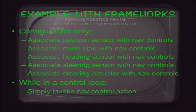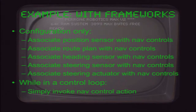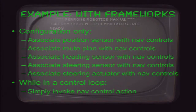With a framework, by using configuration files you associate a position sensor with your nav controls object, a route plan, a heading sensor, a steering sensor, and a steering actuator. In a control loop, it simply invokes the nav control action. You can have self-navigation for an application quickly, and focus on the big things. For the urban grand challenge, we didn't want to spend time figuring out which way to turn the steering wheel — we wanted to focus on complex things like detecting lines in the road, obstacles, and inducing maneuvers to handle the wide variety of situations the bot would encounter.